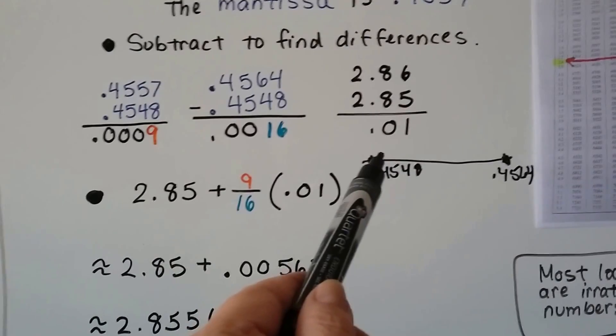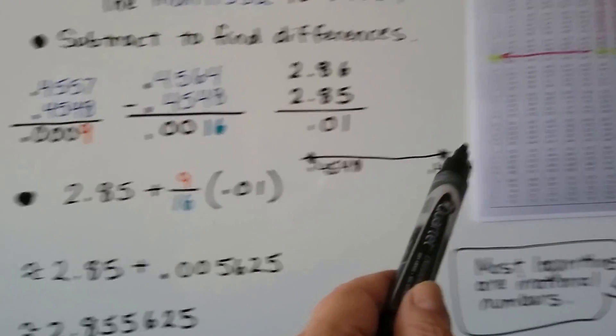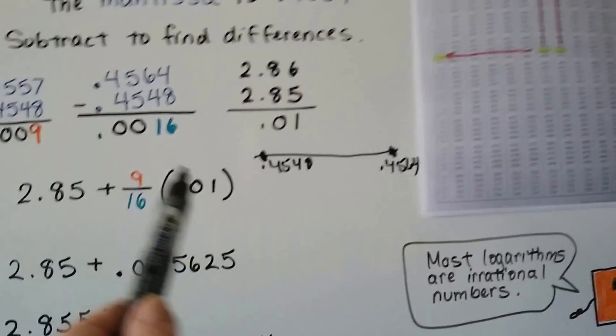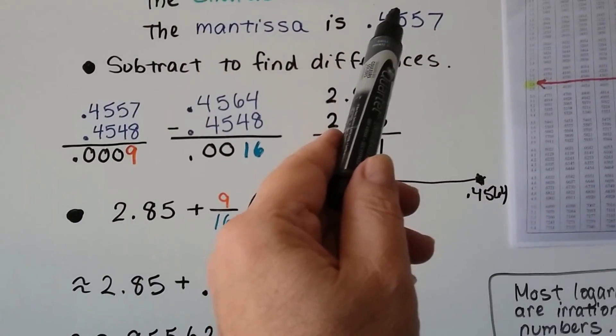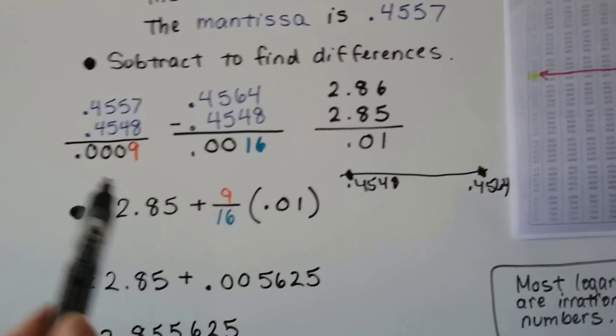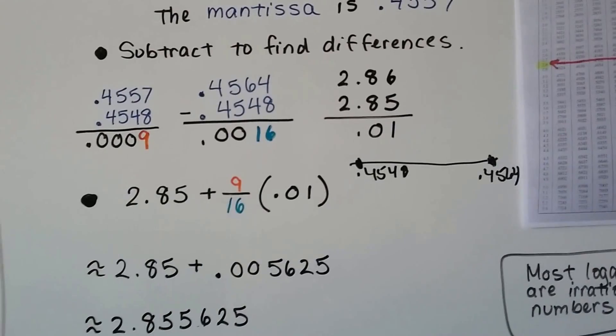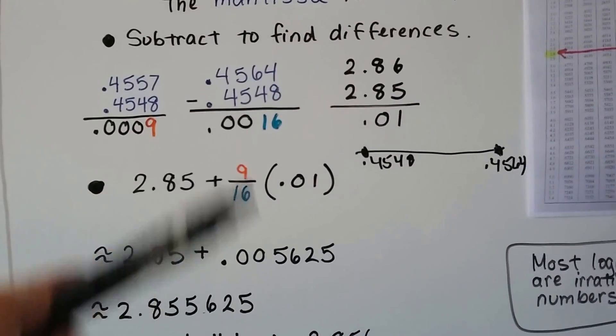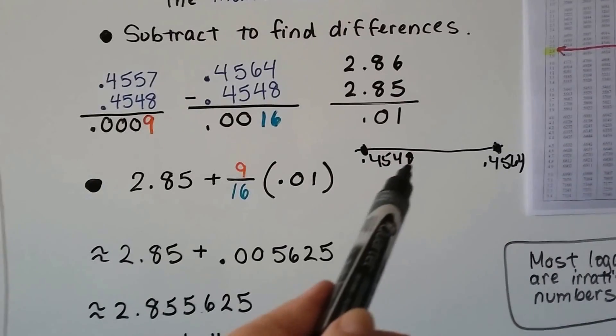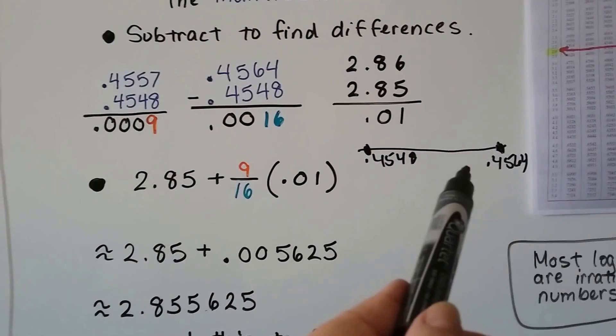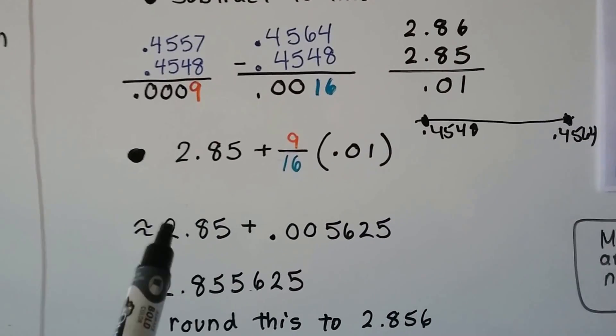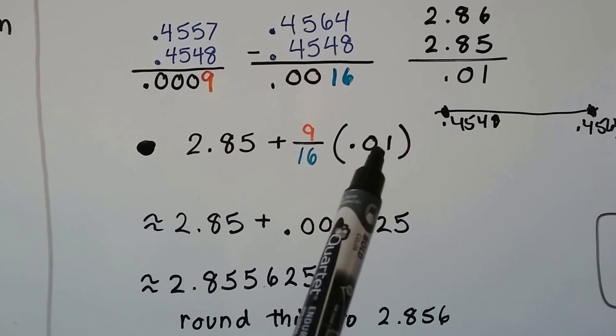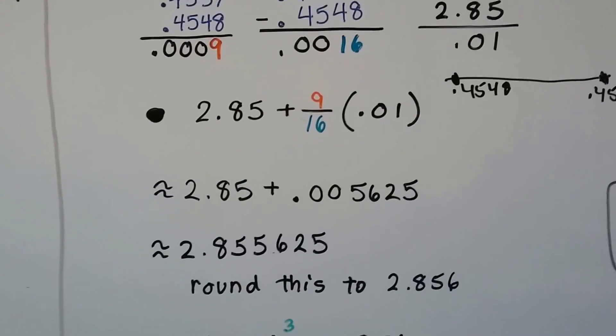So, the difference between this value and this value from the table, those two values, is .0016. And, the difference between the one that we're trying to find and the smaller one is .0009. So, we know it's 9 sixteenths of the way across here. And, the difference between these two is a .01. So, we're going to multiply the 9 sixteenths times the .01. We're going to add it to the 2.85.